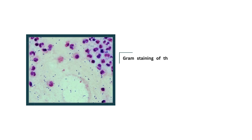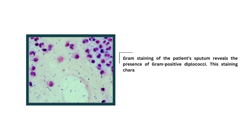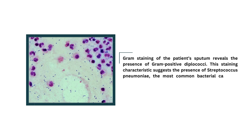Gram staining of the patient's sputum reveals the presence of gram-positive diplococci. This staining characteristic suggests the presence of Streptococcus pneumoniae, the most common bacterial cause of community-acquired pneumonia.